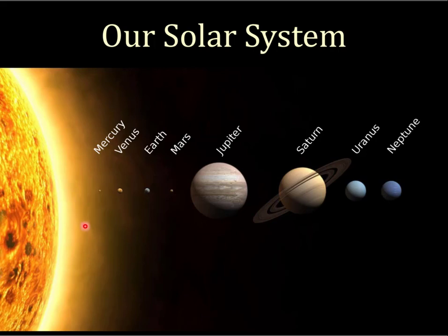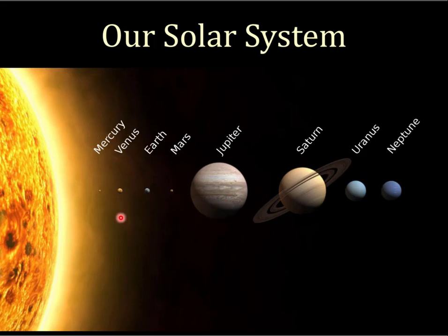The next thing you notice is a very distinctive size difference between the inner four planets and the outer four planets. That difference isn't just size — it's a very real difference. The inner four are called the terrestrial or earth-like planets, and the outer four are called the Jovian or Jupiter-like planets. The terrestrial planets are not only closer to the Sun, they're closer to each other.